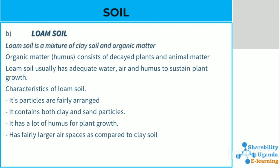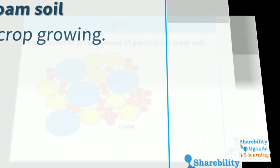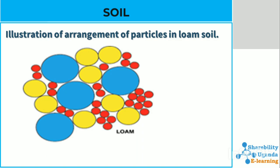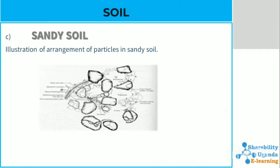Loam soil is a mixture of clay soil and organic matter. Organic matter consists of decayed plants and animal matter. Loam soil usually has adequate water, air, and humus to sustain plant growth. Its particles are fairly arranged and it contains both clay and sand particles. It has a lot of humus for plant growth and has fairly larger air spaces compared to clay soil. Its importance: it is good for crop growing. Loam soil contains a lot of humus and balanced particles of sand and clay, which is why it's good for plant growth.